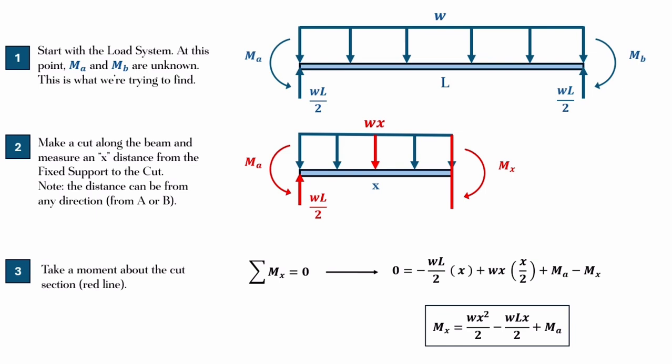We're looking for MA and MB. So, you can imagine that MA is going to be counterclockwise and MB is going to be clockwise, just by thinking intuitively. Step two, you make a cut anywhere along the beam, it doesn't matter where, and that distance becomes X. Now, it's no longer L, it's just X, but you still have your existing forces. You still have your moment at the left, you still have your WL over 2 at the left, and then that W times L that was originally becomes W times X, right? Because it's W times whatever that distance is. In this case, it's just X.